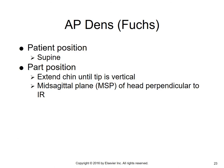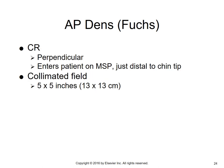For the Fuchs method, only the upper part of the dens is demonstrated — you're not going to see the joint spaces. The patient is supine. Extend the chin until the tip is vertical. The mid-sagittal plane of the head is perpendicular to the IR. The central ray enters perpendicular on the MSP, just distal to the chin tip.